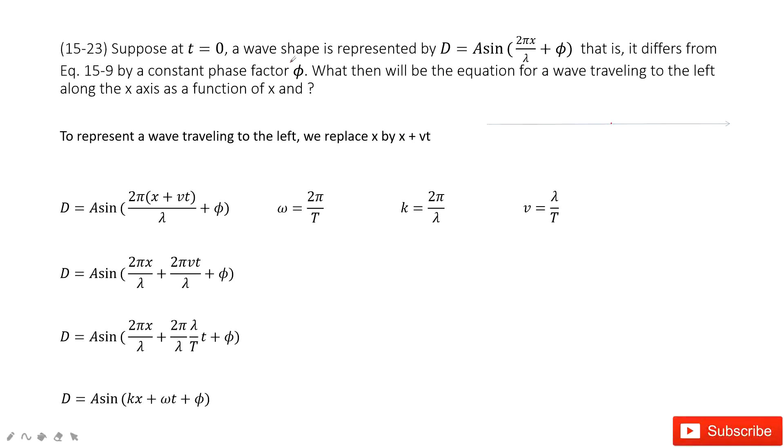First thing we can see, at the initial time t equals 0, we know the wave function equals this one. Now we need to write the equation for a wave traveling to the left along the x-axis as a function of x and t.